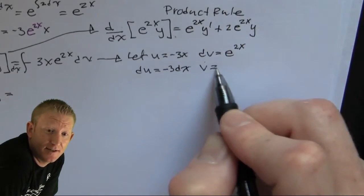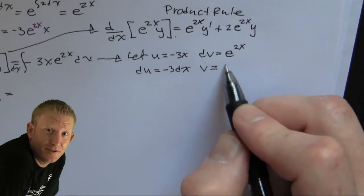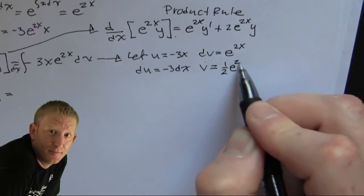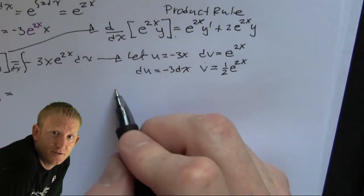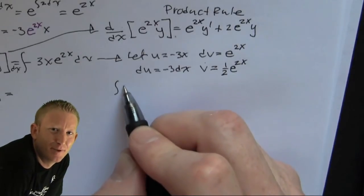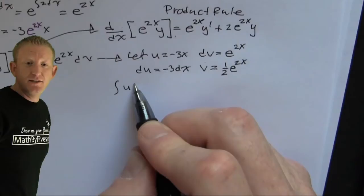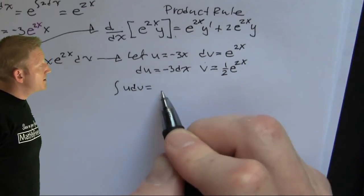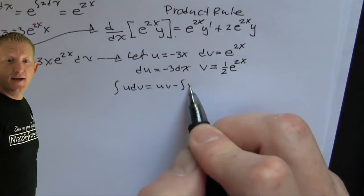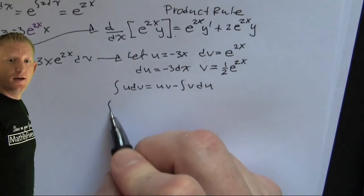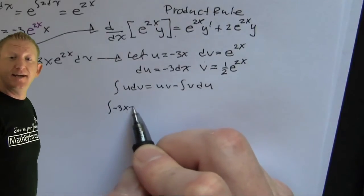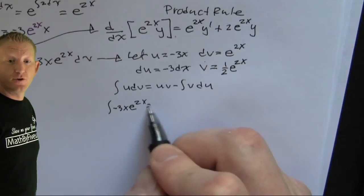Oh, is that when two groups get together and they have different views and then they come to a solution? No, that's bipartisan. Okay. I let u be minus 3x. Yeah. And then what did I do? dv was that guy. And then I separated it into my parts formula.